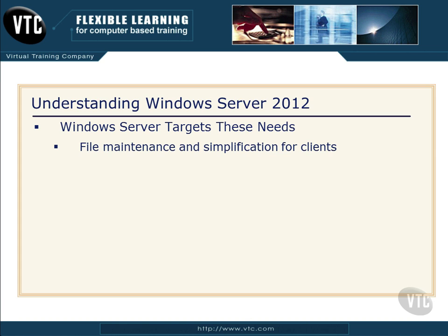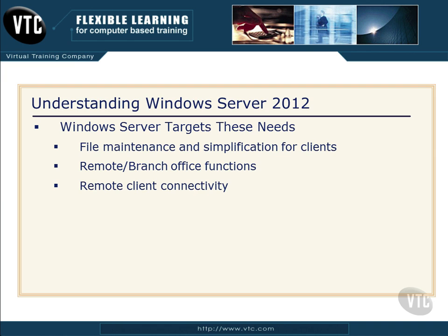We also picked up file maintenance and simplification for clients. The client doesn't really have to understand anything about what's going on in the back end — all they have to know how to do is log in, go to their particular resources on the network, work, and then log out. Windows Server 2012 also targets remote and branch office functions because these are part of the real world.